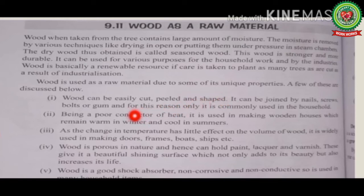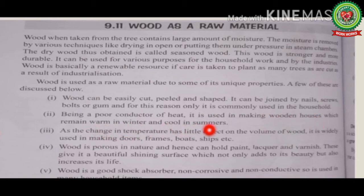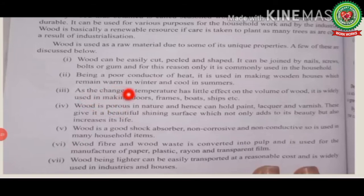Wood is used for furniture and many household objects. It can be joined by nails, screws, bolts, or gums. Being a poor conductor of heat, it is used in making wooden houses that remain warm in winter and cool in summer. Since changes in temperature have little effect on the volume of wood, it is widely used in making doors, frames, boards, and ships.